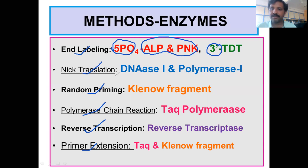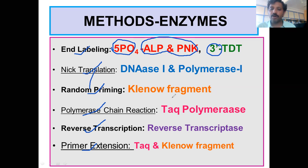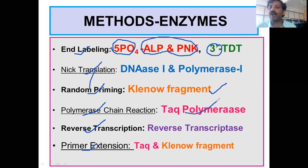The second method is nick translation — nick means making a single-strand break. DNA polymerase I is required for that method. Random priming requires the Klenow fragment, which is the large fragment of DNA polymerase I. Polymerase chain reaction requires Taq polymerase. Reverse transcription requires reverse transcriptase, and primer extension requires Taq and Klenow fragments. These are the different methods and their corresponding enzymes to prepare the probe.